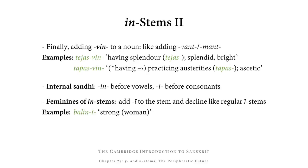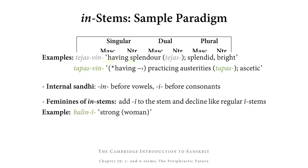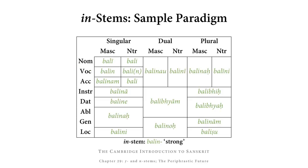The internal sandhi of all IN-stems is that they appear ending in -in before endings beginning with vowels, but ending in -i before endings beginning with consonants. The feminines of IN-stems add long ī to the stem and thus decline like regular long-ī stems — so from balin we get balinī, meaning a strong woman. Since the feminines aren't IN-stems but long-ī stems, they don't need to be included in our IN-stem paradigm.